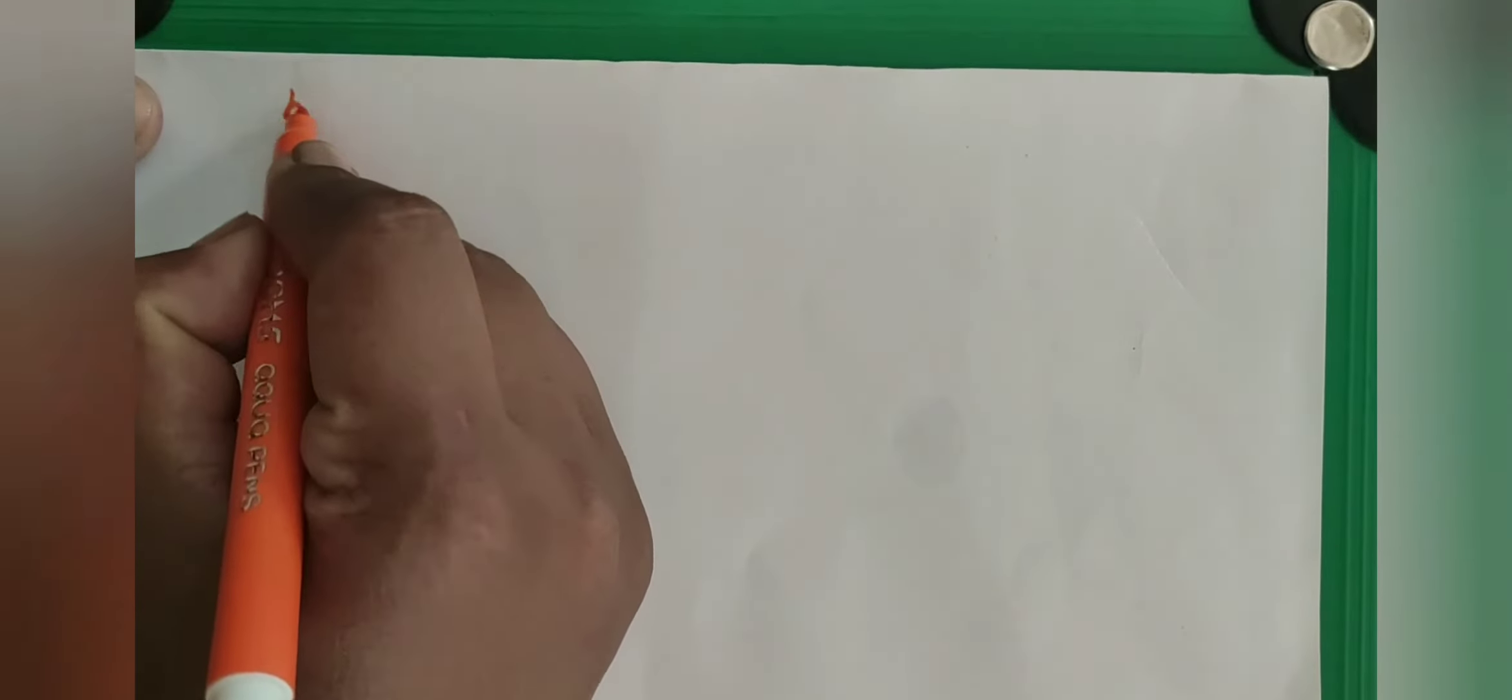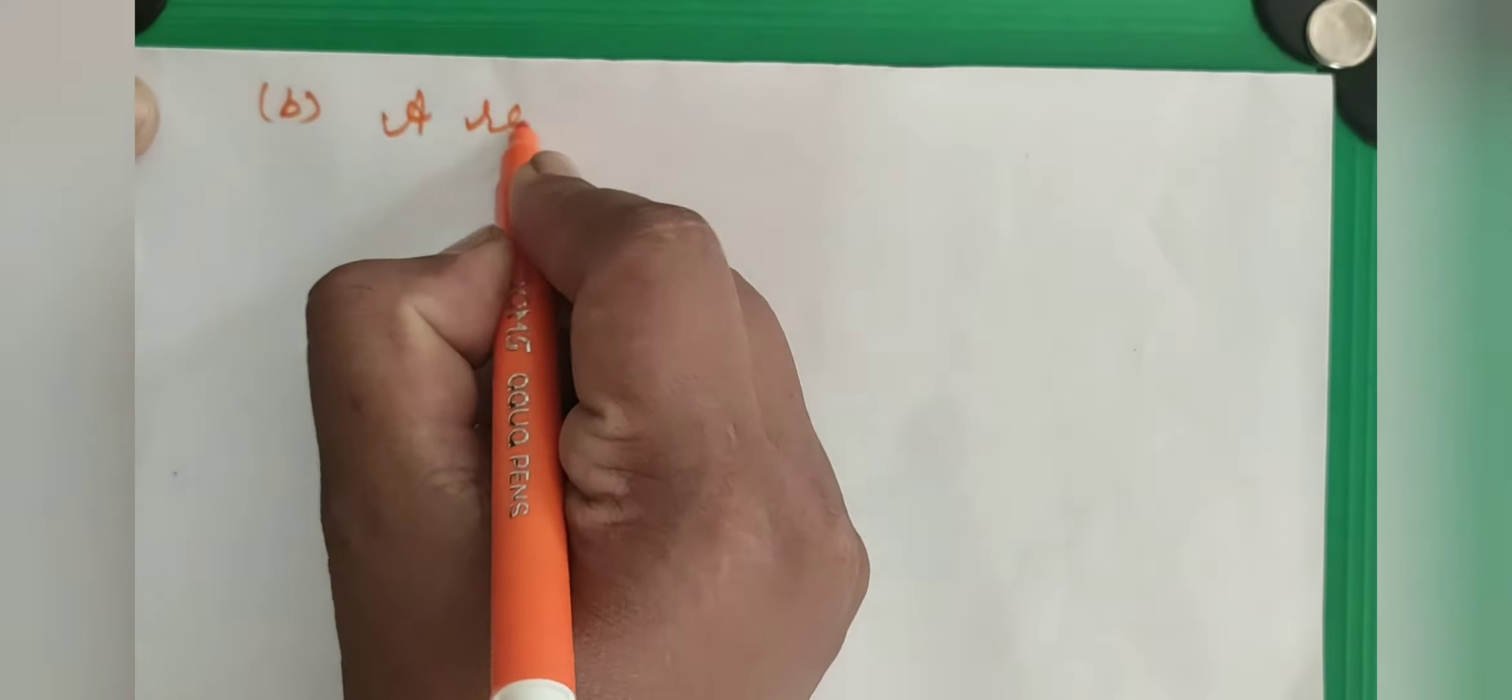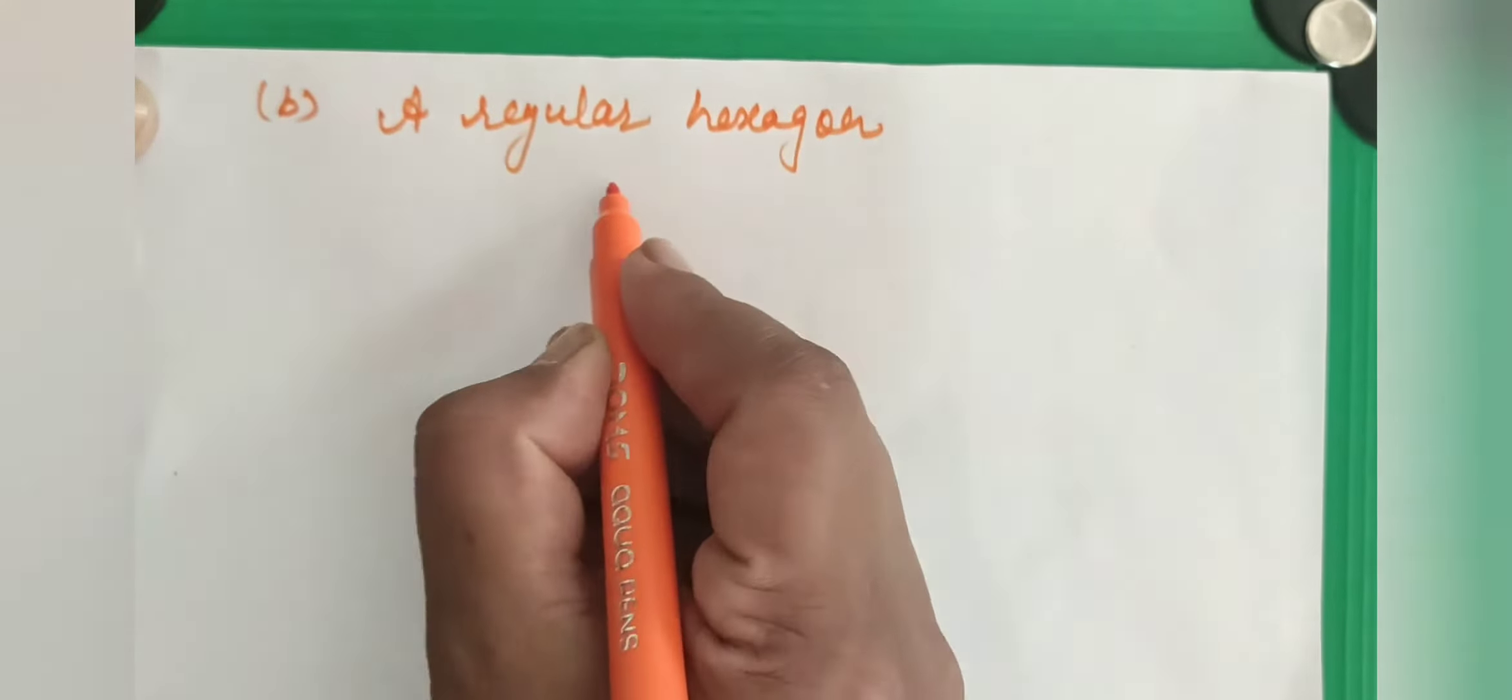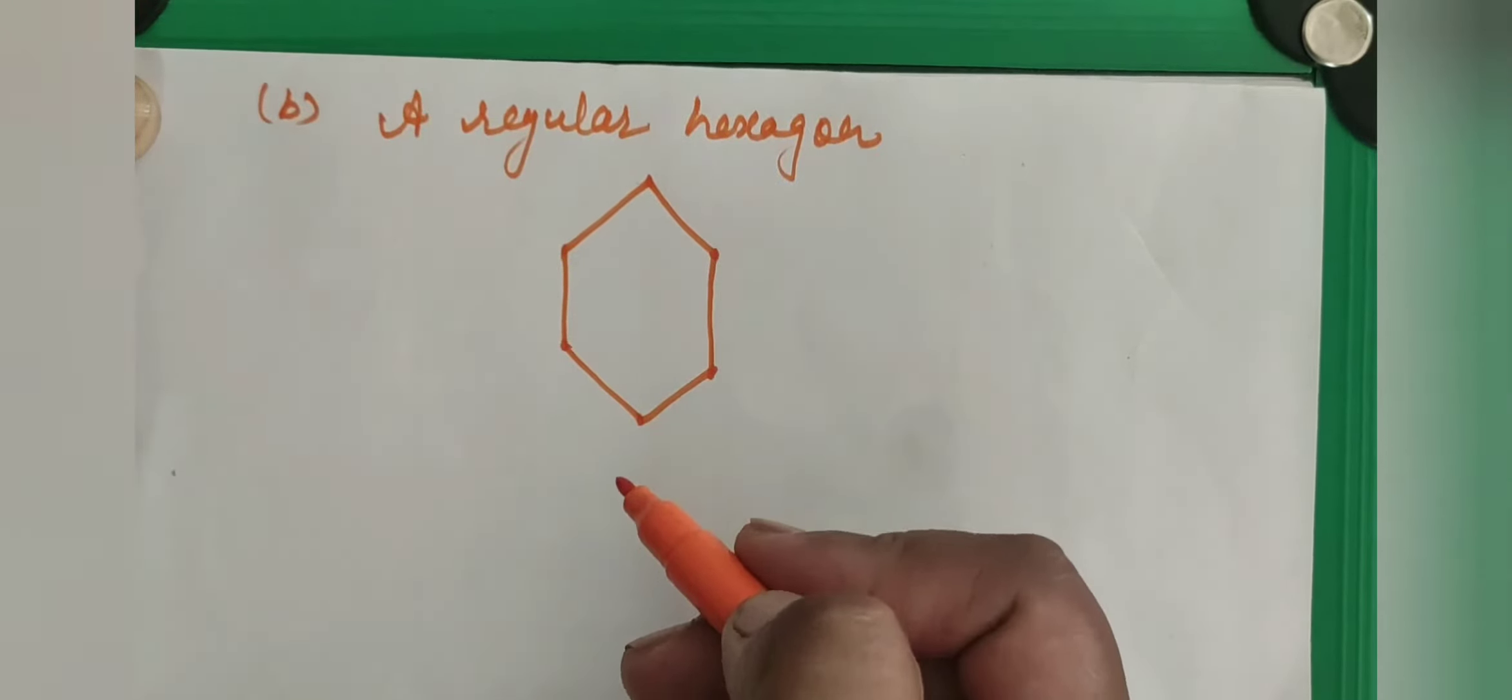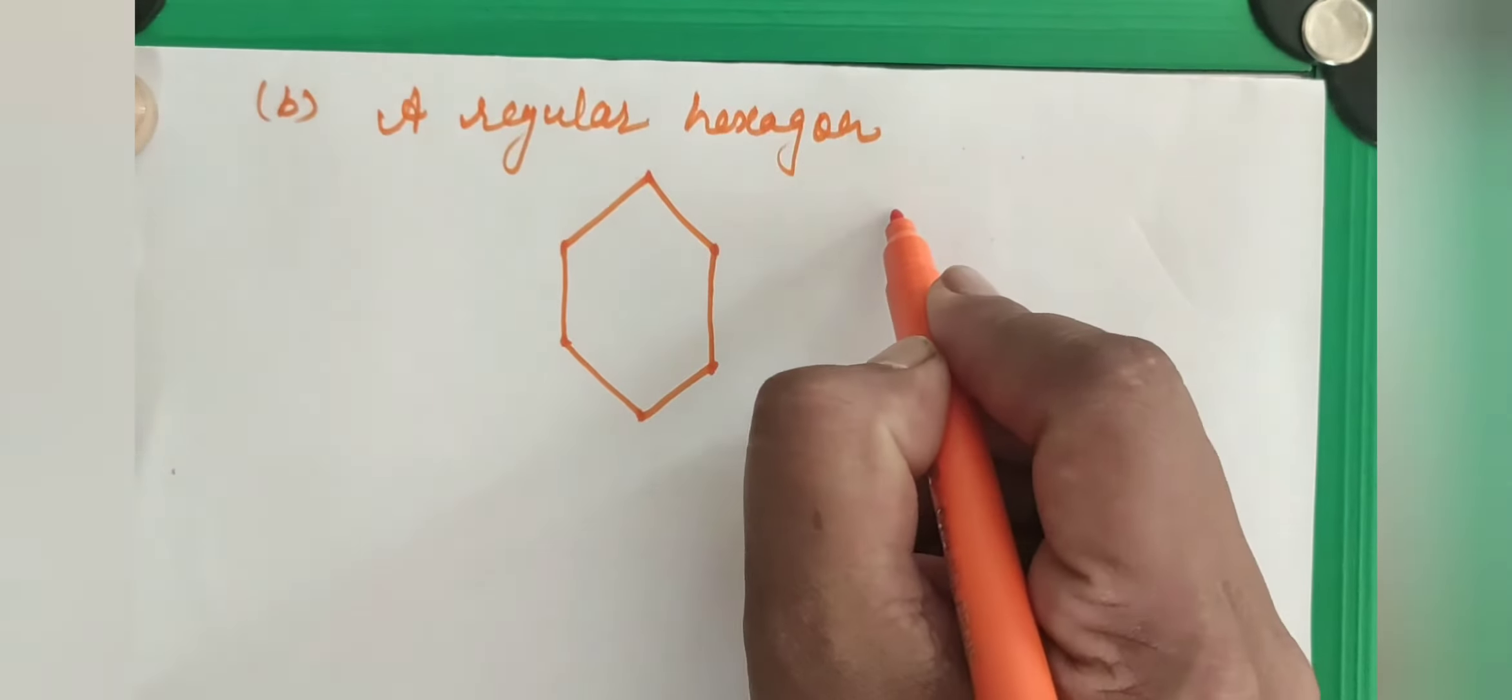Now the second question. The second question is a regular hexagon. Hexagon consists of 6 sides. You see here, this is a hexagon. And they are asking how many diagonals are there in a hexagon. Again we will put the formula.